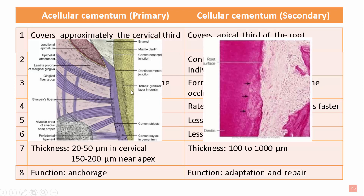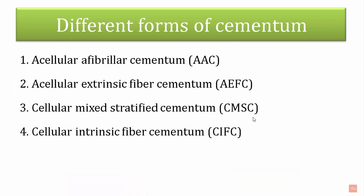Anchorage is achieved because acellular cementum contains more Sharpey's fibers, which connect the periodontal ligament from the tooth to the alveolar bone. Cellular cementum functions in adaptation and repair — whenever there is trauma, fracture, or orthodontic tooth movement creating areas of resorption, cellular cementum fills those areas. There are four different forms of cementum: two acellular types and two cellular types, also classified by fiber origin — intrinsic, extrinsic, mixed, or afibrillar.